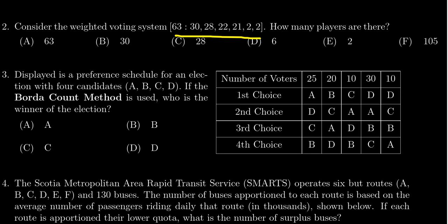their weights are exactly 30, 28, 22, 21, 2, and 2. And then it asks, how many players are there in the system?